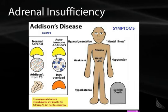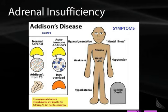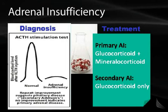Hyperkalemia ensues because the destruction of the adrenal cortex affects both cortisol and aldosterone production — lacking aldosterone results in hypotension and hyperkalemia. These findings are not seen in secondary adrenal insufficiency, where the problem is in the pituitary. In secondary, ACTH production is decreased, so alpha-MSH is also decreased — no hyperpigmentation. And since the adrenal gland itself is intact, the aldosterone axis is unaffected — no hyperkalemia.